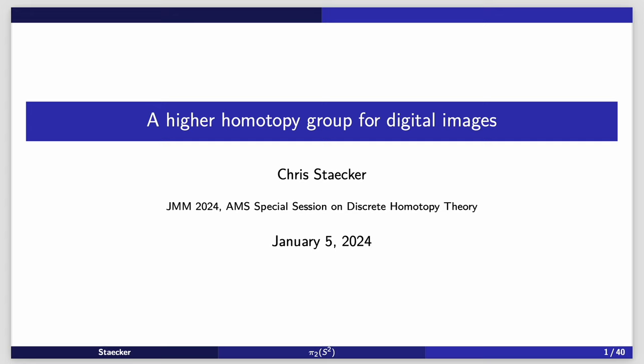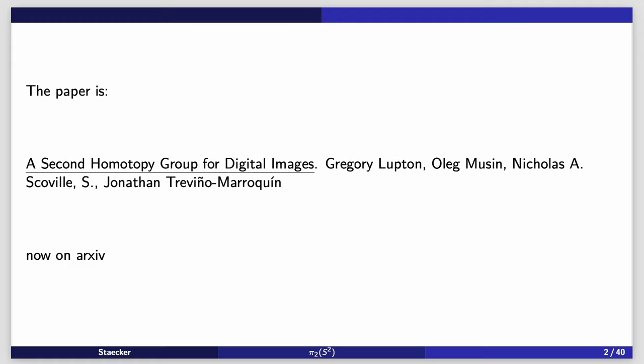A higher homotopy group for digital images is what I want to talk about. This is the paper that I'm going to talk about, which is on the archive. Now, I want to apologize to my co-authors. I didn't fill out the JMM registration thing properly, so their names did not appear in the program, but it should have. They are Greg Lupton, Oleg Moussen, Nick Scoville, and Jonathan Trevino. Thank you to them, and sorry I left you out of the listing.